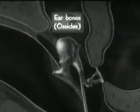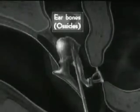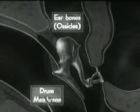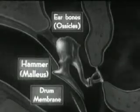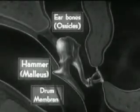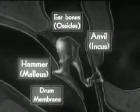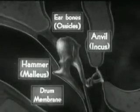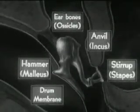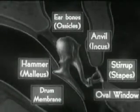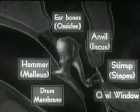Let's see what happens when sound waves strike the drum membrane. This bone, consisting of a head and handle, is called a hammer or malleus, and is fastened by the handle to the drum membrane. United to the malleus by a joint is the anvil or incus, which in turn touches the stirrup or stapes. The foot plate of the stirrup is attached by a movable ligament to an opening called the oval window.